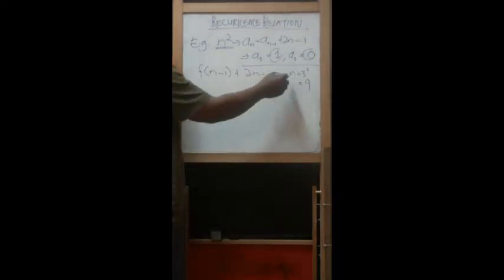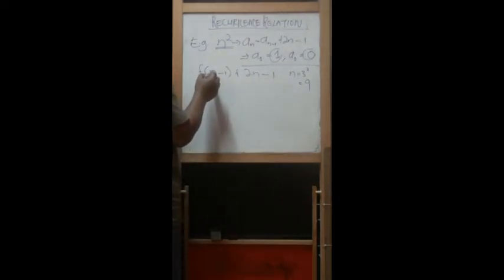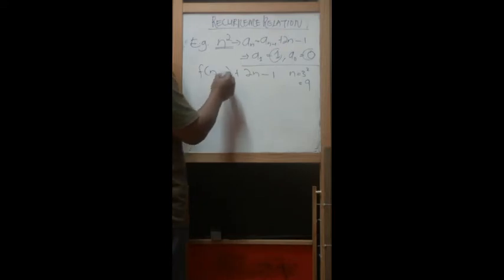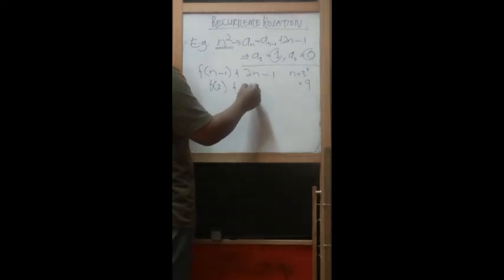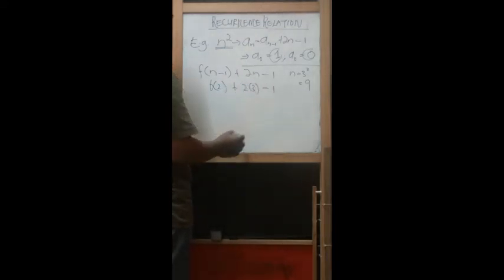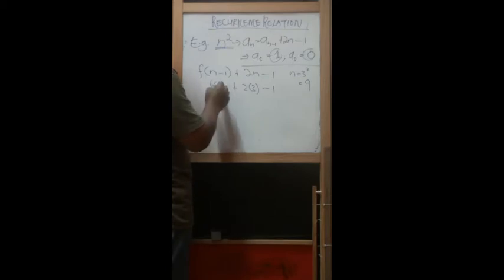N equal to 3, so 3 minus 1 is 2, plus 2 times 3 minus 1. And after that, this 2 minus 1 is 1, so we return 1 here.